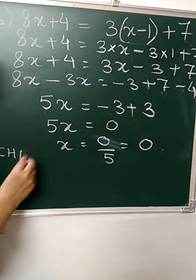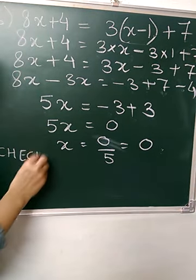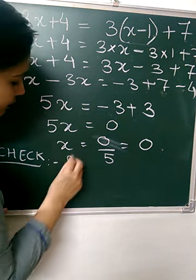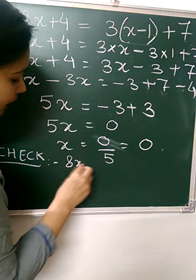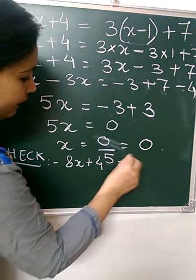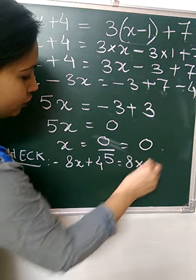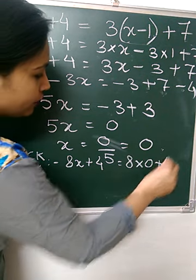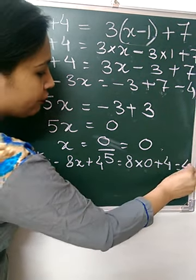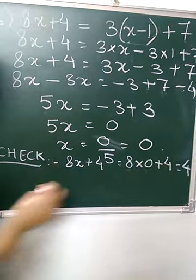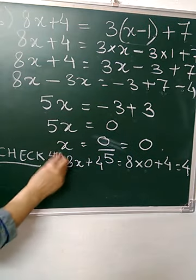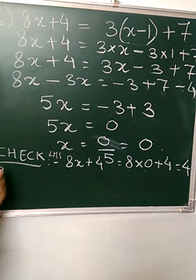Now we do the check. LHS: 8x + 4. So it will be 8 into 0 plus 4. 8 zeros are 0, so the answer will be 4. This is your LHS. Then we do the RHS.